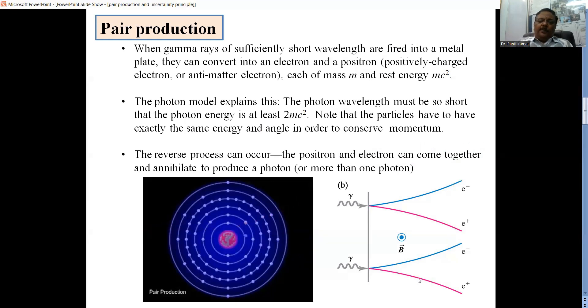This process is explained by using the quantum concept. The photon wavelength should be short, that means it should be highly energetic, and the energy of the photon should be at least 2mc square. So if a photon with energy greater than 2mc square falls on the metal, pair production will take place.